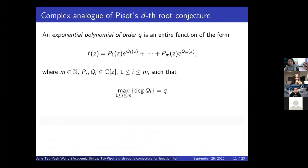What about the complex analog? This was developed independently starting from Ritt in the 1920s. An exponential polynomial in the complex case of order q has the following form: the coefficient is a polynomial over C, and the exponential function is the exponential of some polynomial q_i. The order q is the maximum of the degrees of q_1 through q_m.